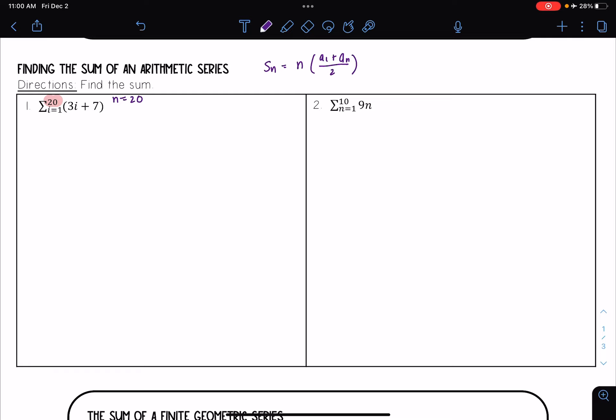So first I'm going to find my first term. So I have a1 is equal to, and what's in the sum is my rule. So I want to replace i with 1. So I have 3 times 1 plus 7 which gets me 10.